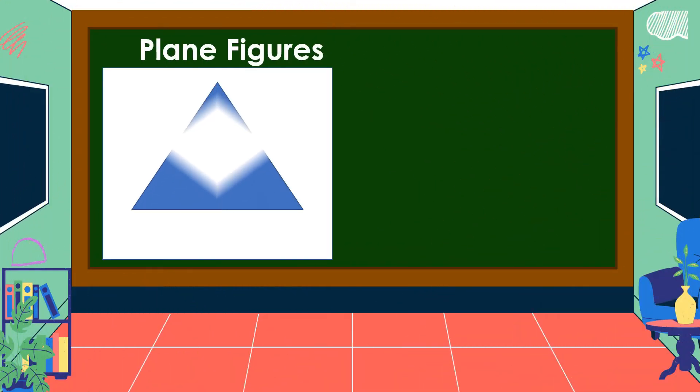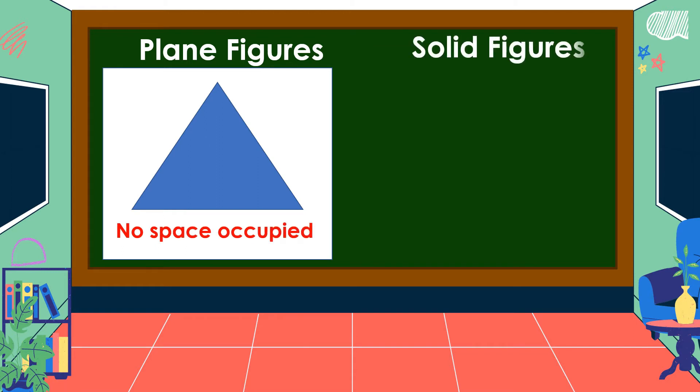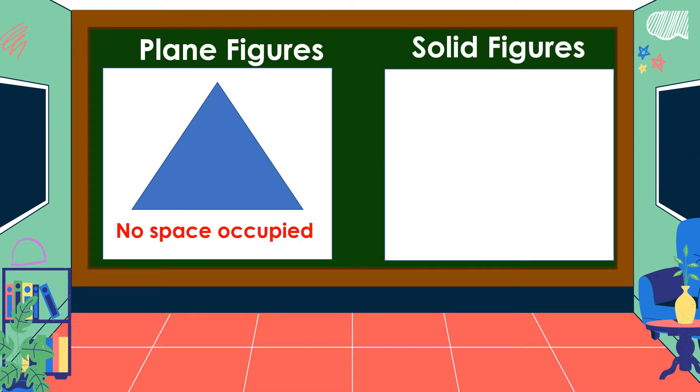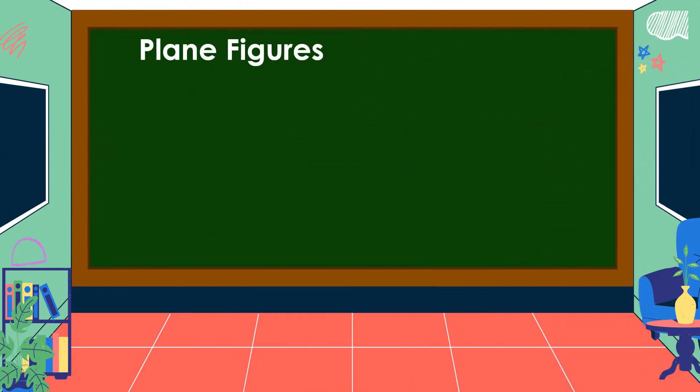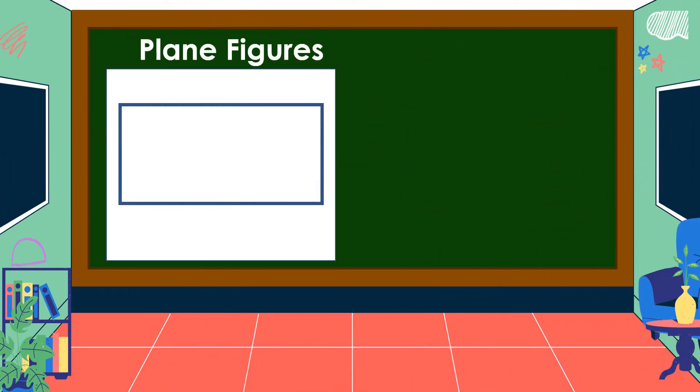occupy any space because they lie on a plane, while solid figures occupy space. Every object that occupies space has a volume. Plane figures are straightforward to construct